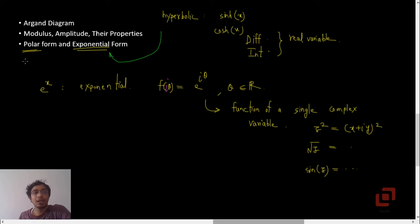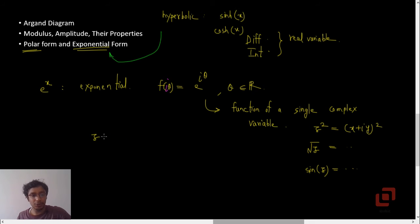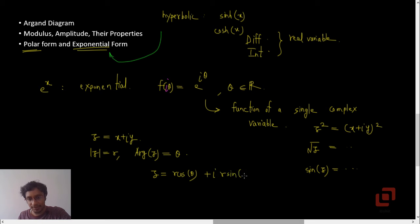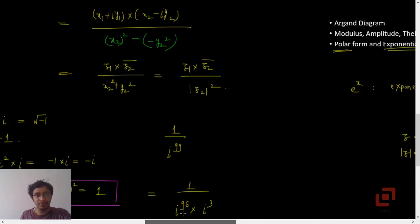So what is the polar form of a complex number? We consider the complex number z which is equal to x plus i y. We say that the modulus of z is r and the principal argument is theta. You can prove that z is also equal to r cos theta plus i into r sin theta, or in short, r times (cos theta plus i sin theta).